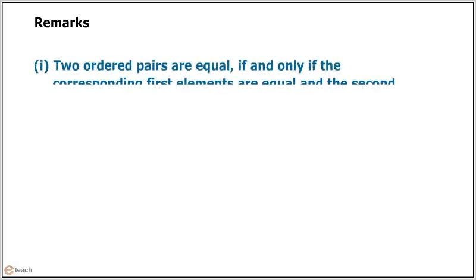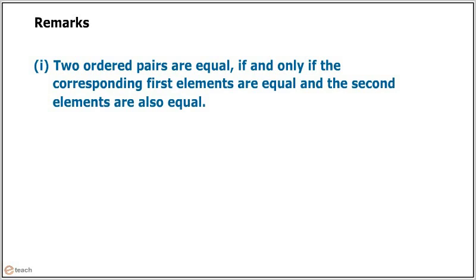Let us have some remarks over Cartesian products. Two ordered pairs are equal if and only if the corresponding first elements are equal and the second elements are also equal.